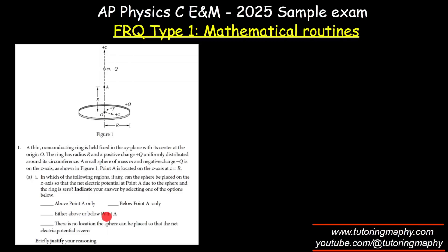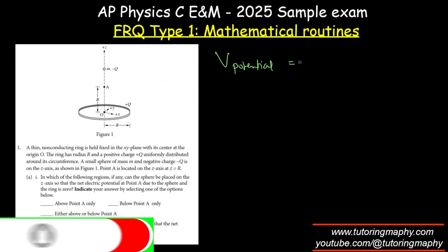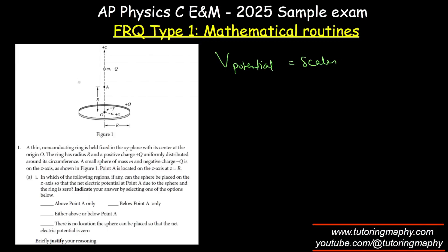The options are: above A, below A, either above or below A, or no location. To justify analytically: potential is a scalar quantity. The ring has charge Q and the sphere has charge negative Q, so their potentials are equal and opposite. Even if I place the mass in one location, there will be a position where the potential at A is zero because the charges are of opposite signs.